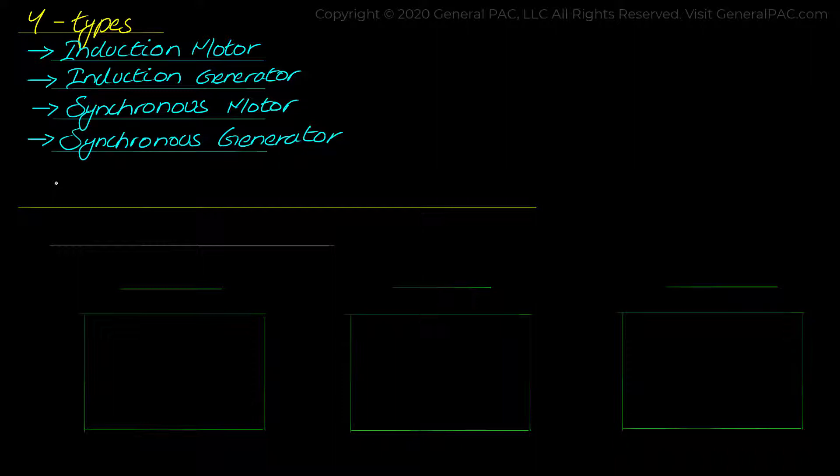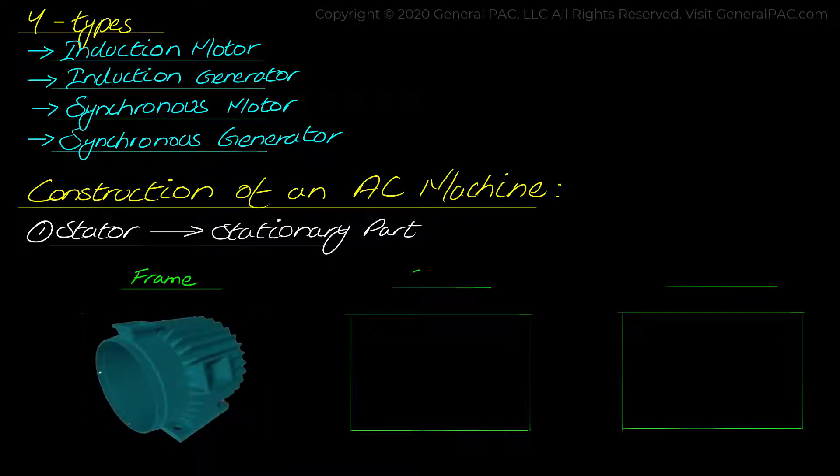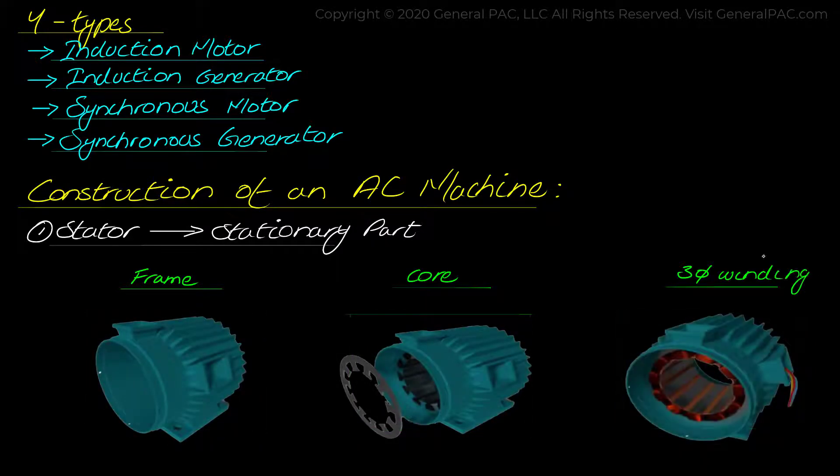Now let's discuss the general construction of an AC machine. Each three-phase AC machine consists of two parts: the stator and the rotor. The stator is the stationary part of the machine and consists of a frame, core, and three-phase windings.